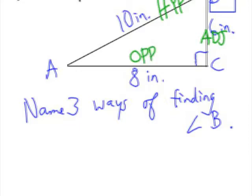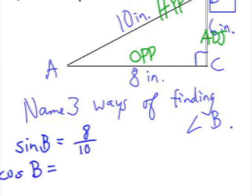Now we can use our sine, cosine, and tangent ratios to figure this out. If I want to use the sine of angle B, then I'm going to have the opposite 8 over the hypotenuse of 10. If I want to use the cosine of angle B, I would use the adjacent, which is 6, over the hypotenuse of 10.